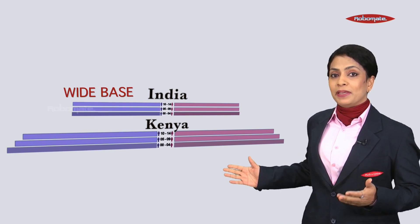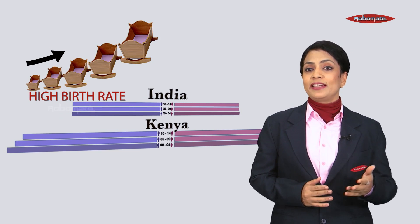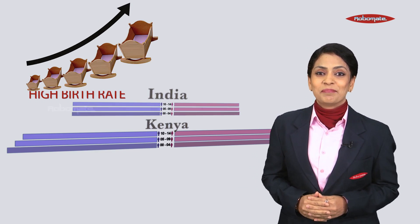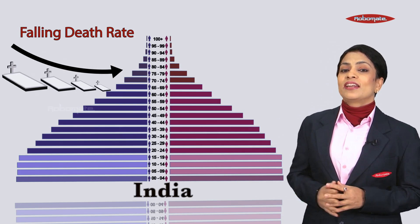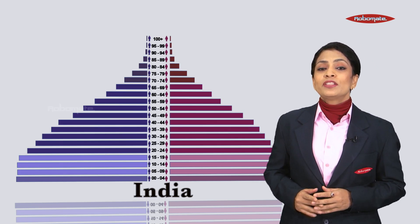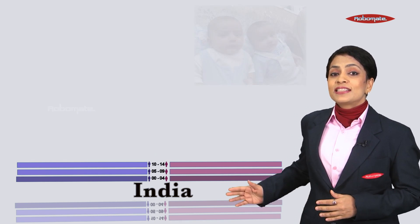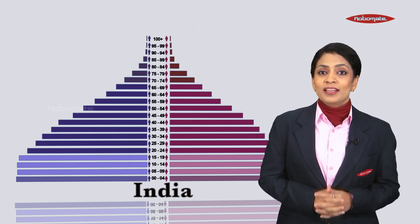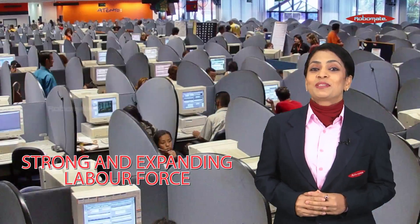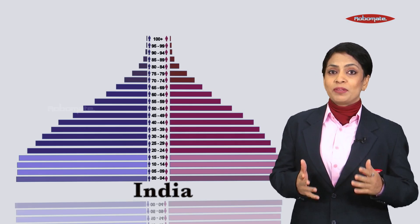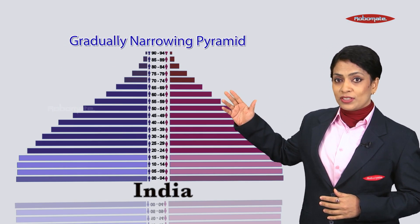Unlike Kenya, which has a very wide pyramid base, India's population pyramid has a wide base, indicating a high birth rate though not as high as Kenya's. Death rates, especially among the very young, are decreasing, so the pyramid is broad in the younger age groups because more infants survive to adulthood. A relatively large number of young people are found in India, which means a strong and expanding labor force.